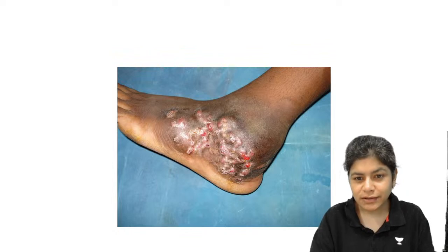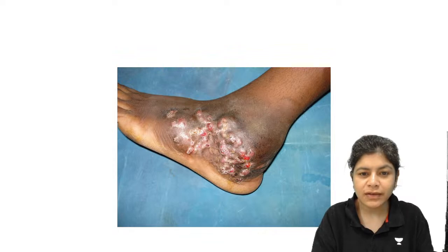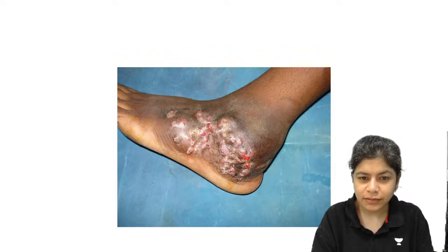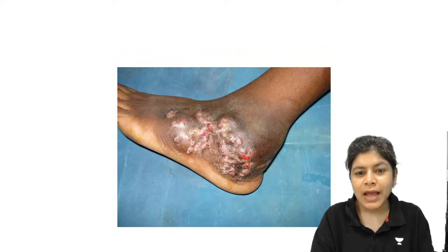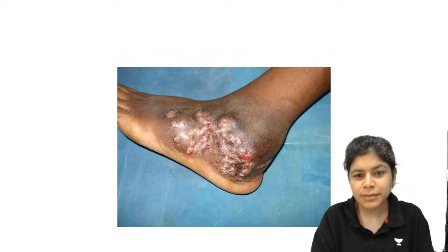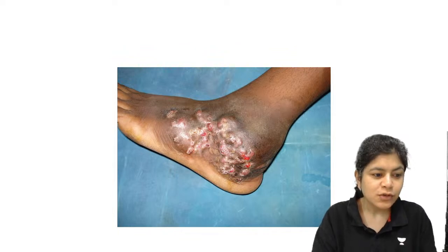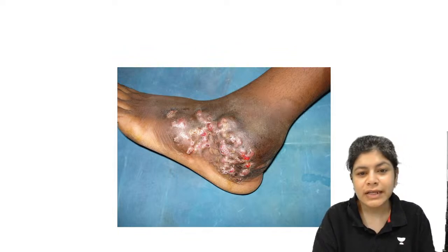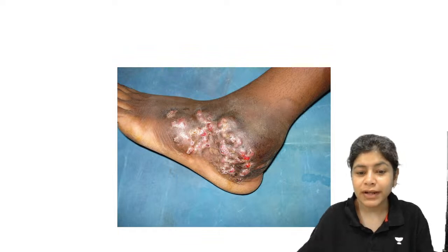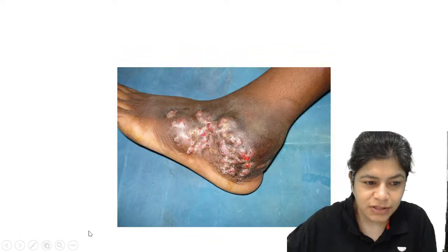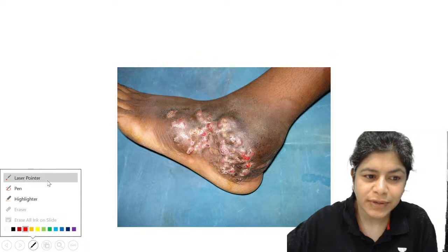This is a 14-year-old male presenting with swelling localized to the foot, involving the lower half of the foot and the ankle area. It is a lobulated mass, and over and above the swelling you can see there are multiple discharging sinuses. Pratishtha has correctly identified it as a case of mycetoma. How did you recognize it, Pratishtha? What is the triad of mycetoma?